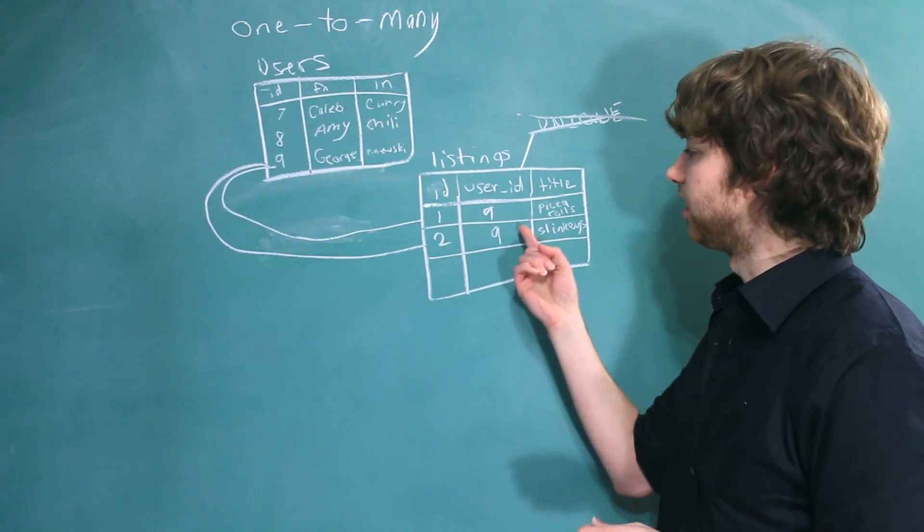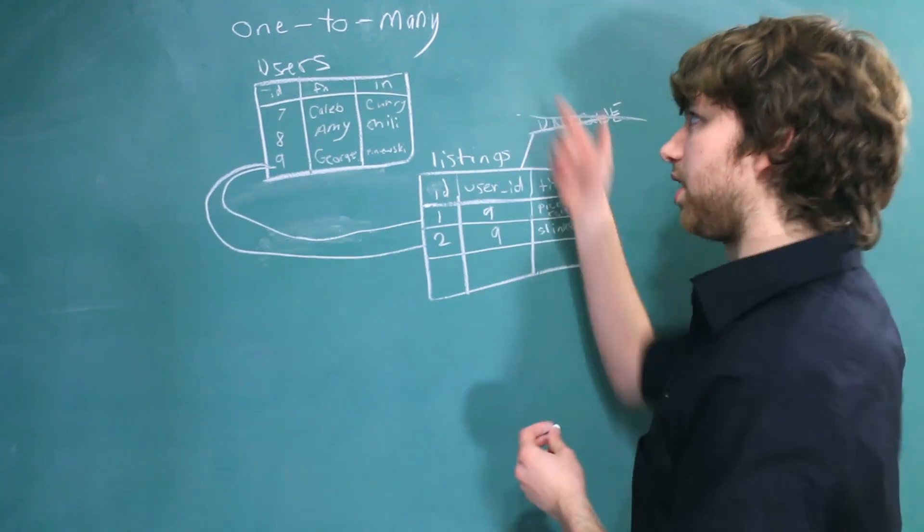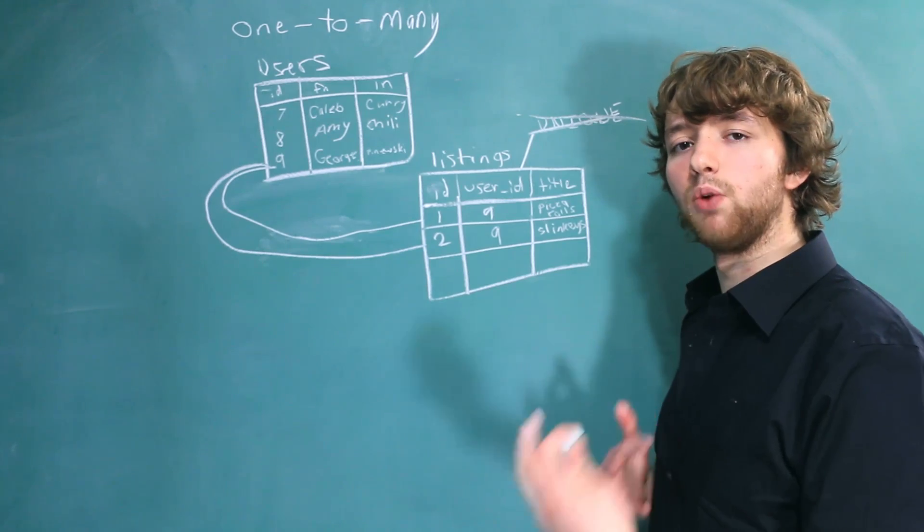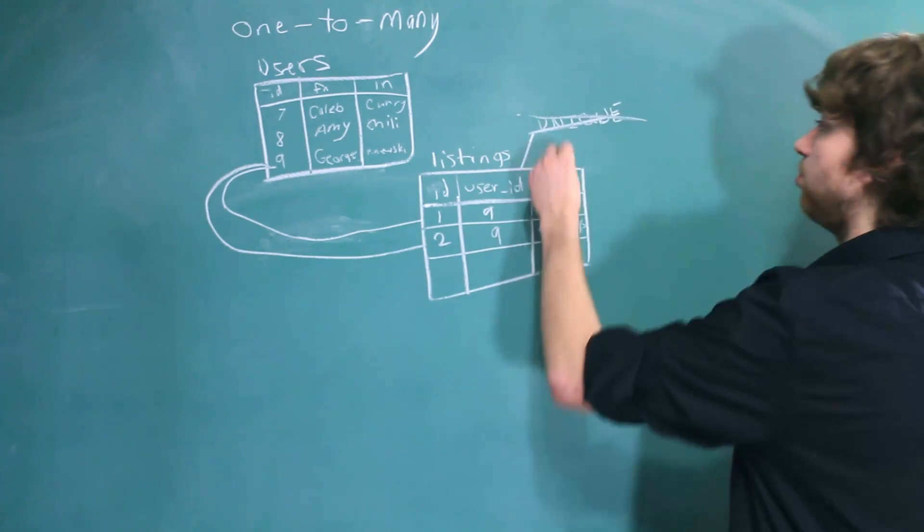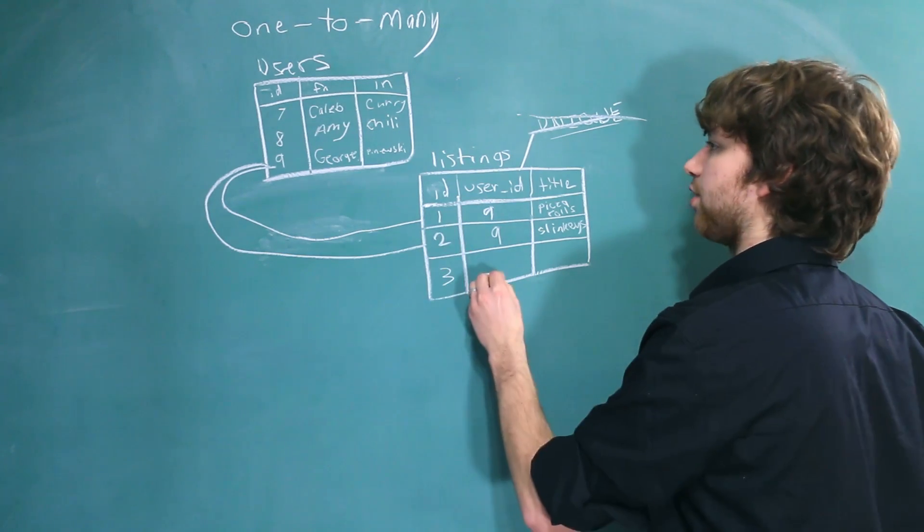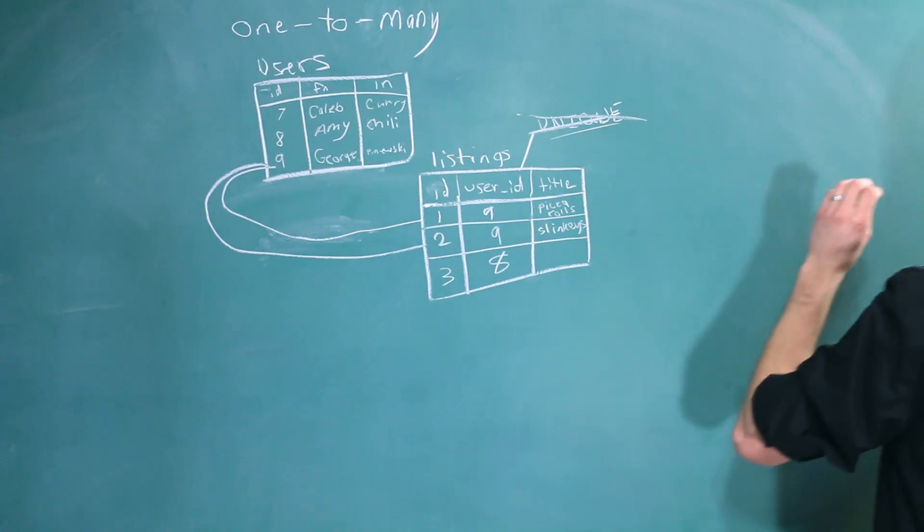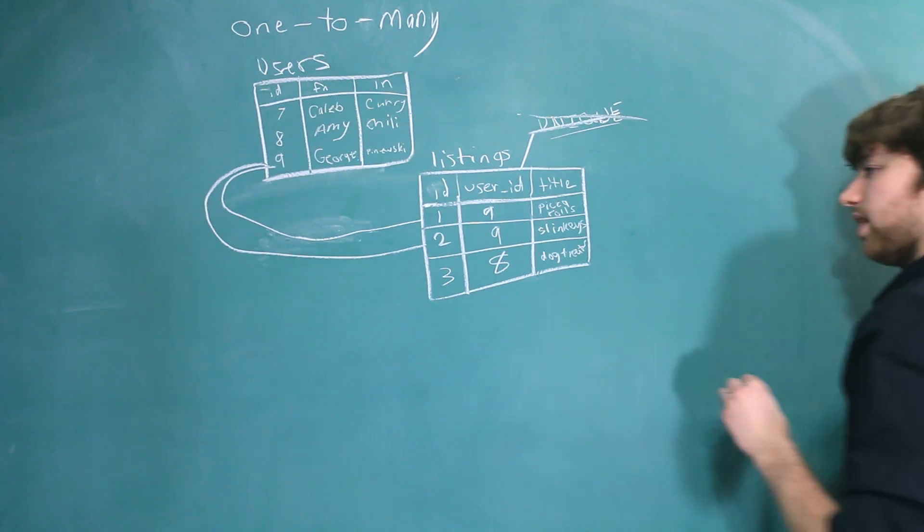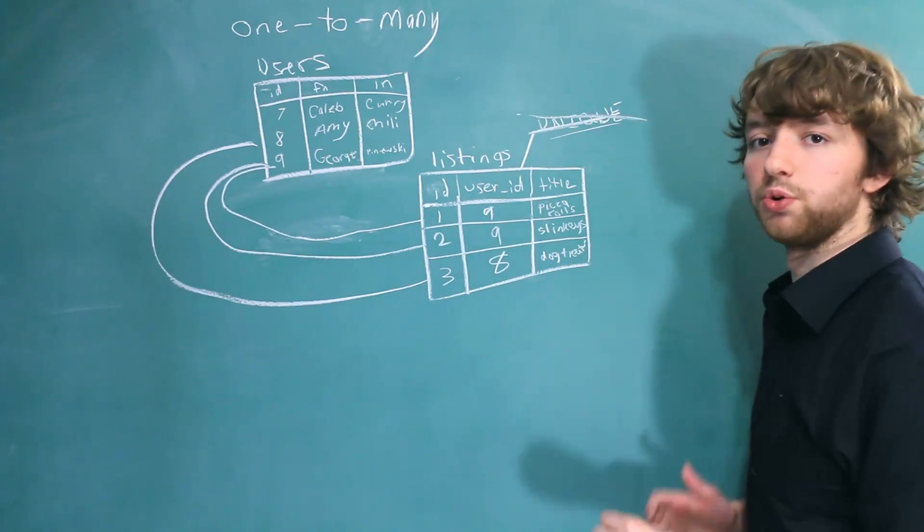Only one user ID can be given for a single item. So this is how you properly design a one-to-many relationship. It's very similar to storing a one-to-one relationship across multiple tables. The only difference is you do not use the unique keyword. We can also have other data in here. For example, we could have another item by the ID of 8, and it could be... Give me an item, hurry! Dog treats. Yum! And that would reference one individual user.